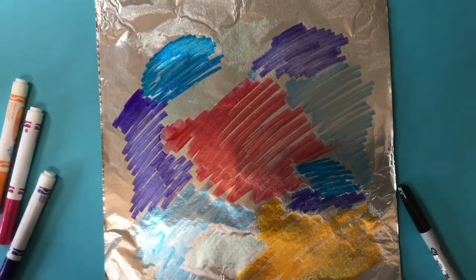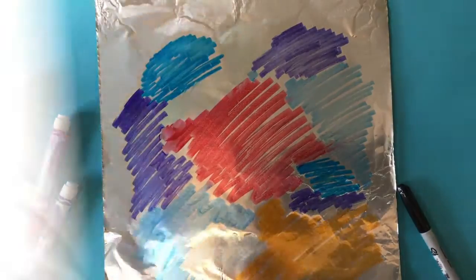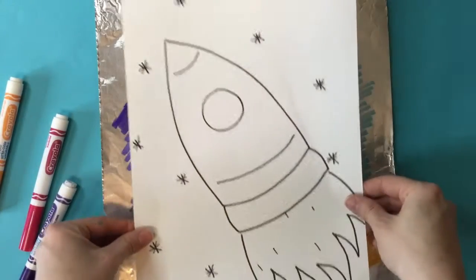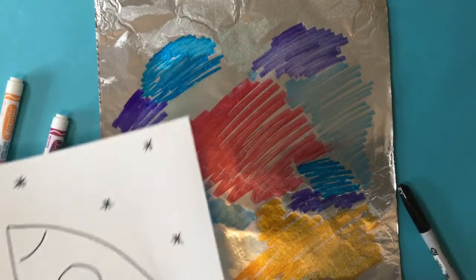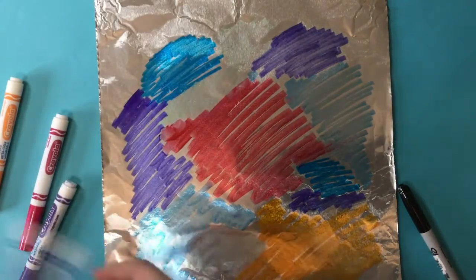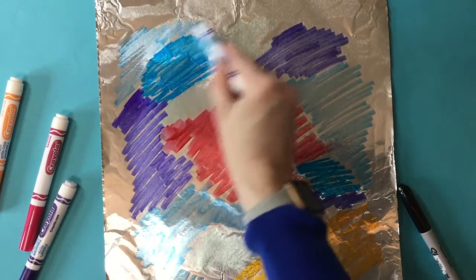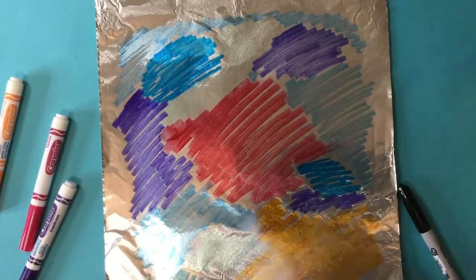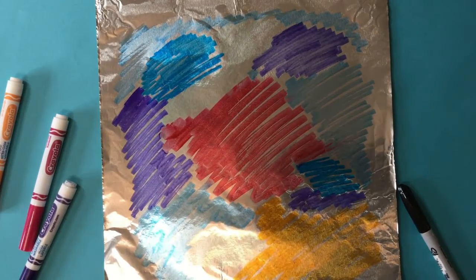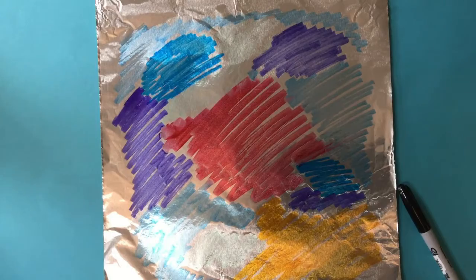All right, once you've got your foil colored, you're going to want to take your paper and kind of lay it on the marker and make sure that you've colored everywhere that the paper is going to be. I can see that I've missed a spot up here in the corner so I want to go ahead and grab a marker and fill in that space where I know my paper is going to be.